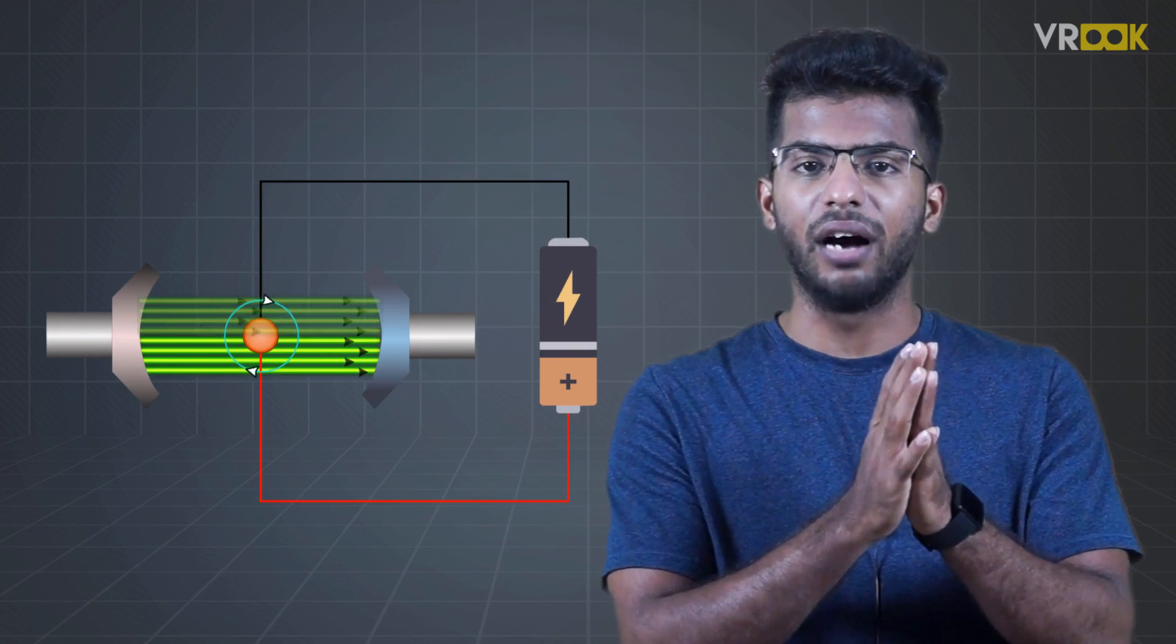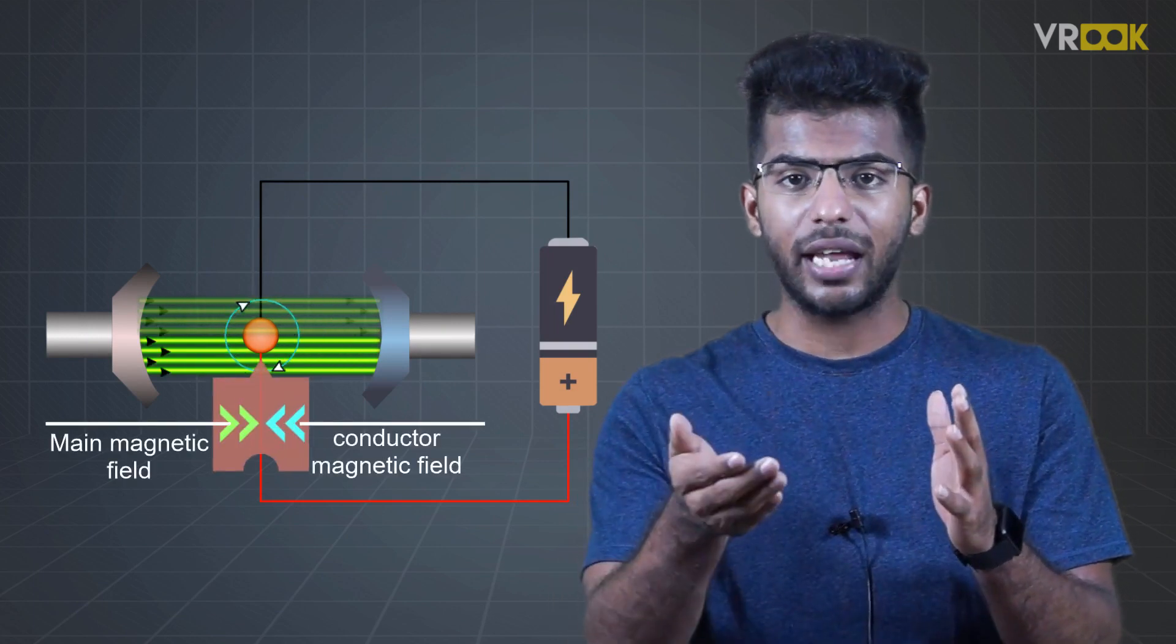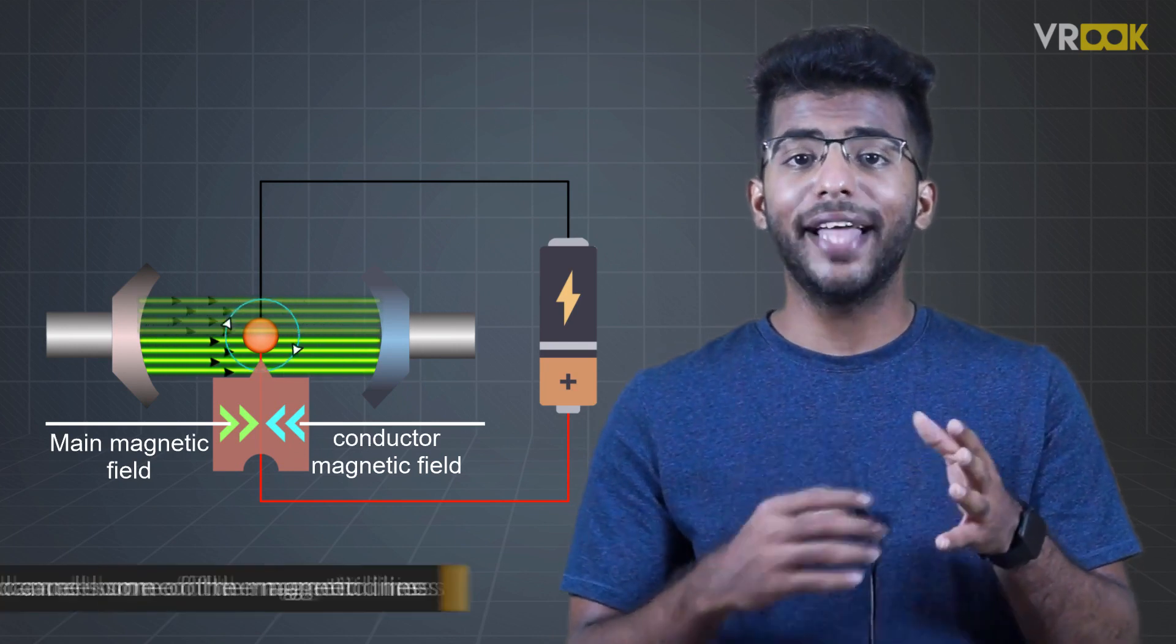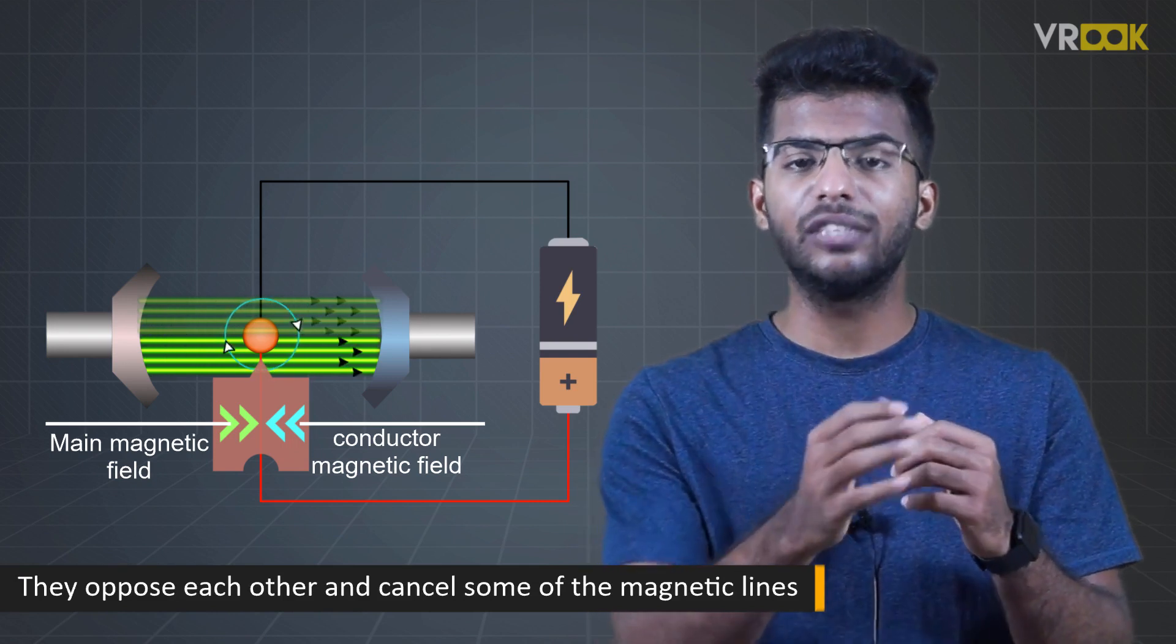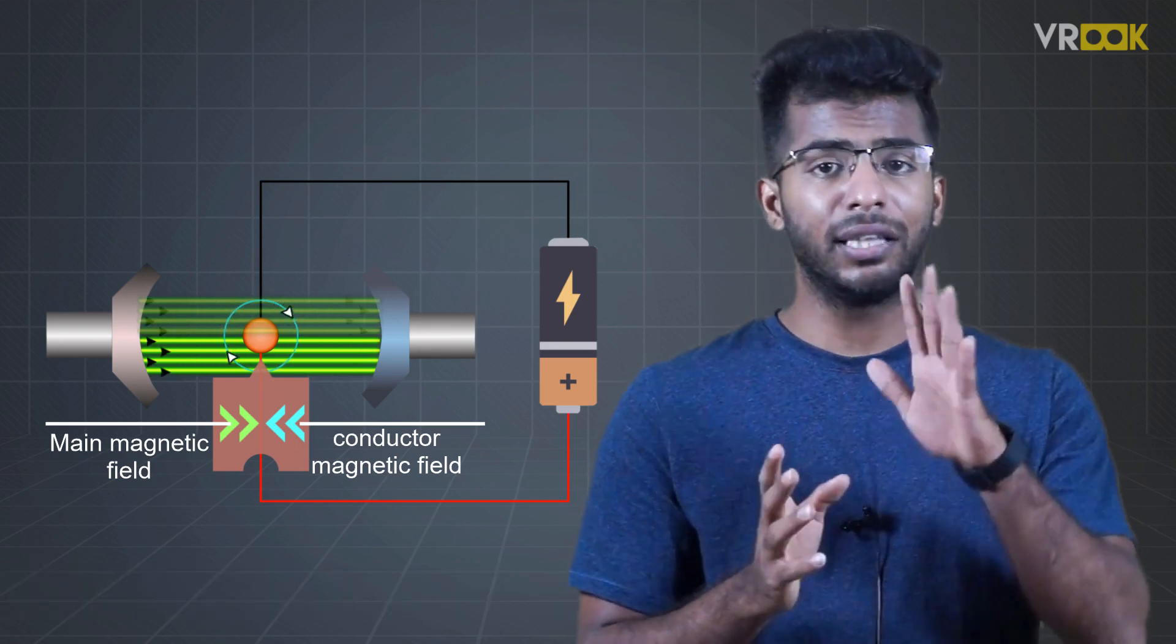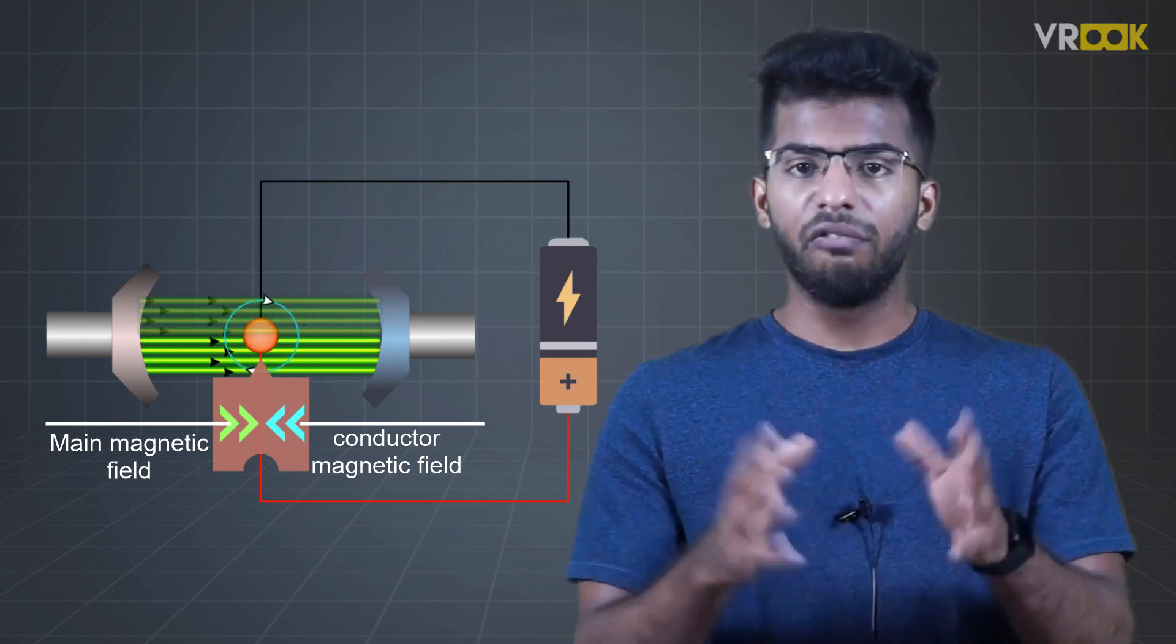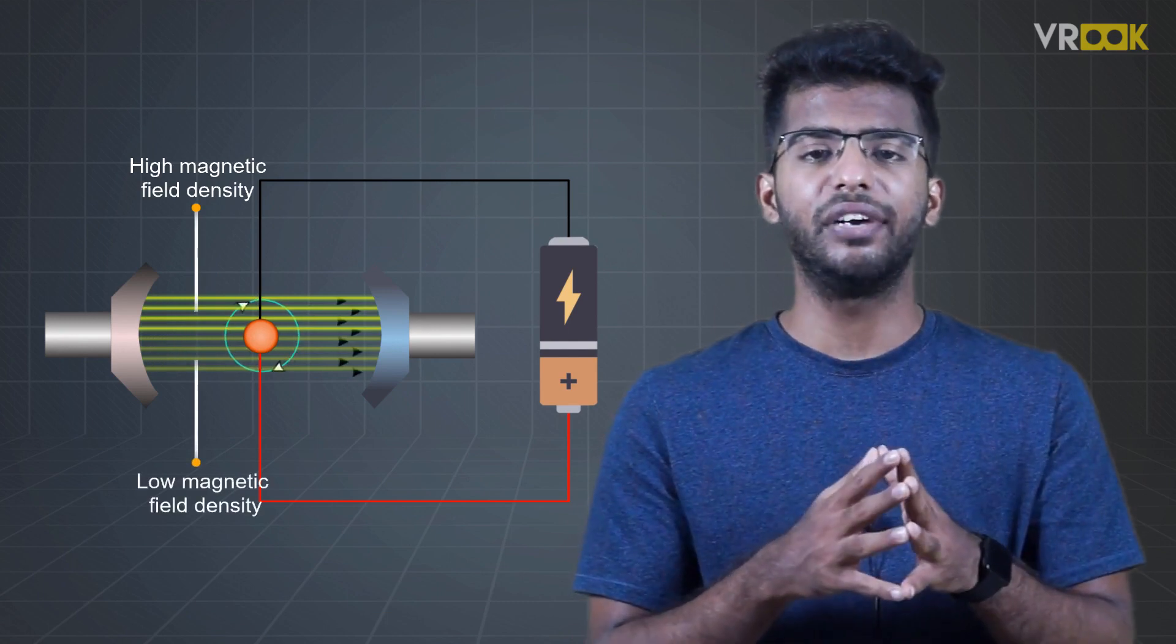Similarly, in the bottom half, the magnetic field due to the conductor will be in the opposite direction to that of the main magnetic field. So, they oppose each other and cancel some of the magnetic lines of force. This means the magnetic field lines will be less in this region.